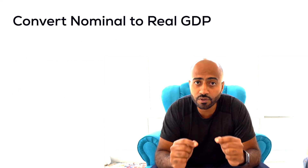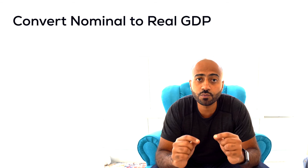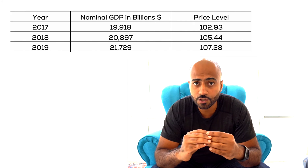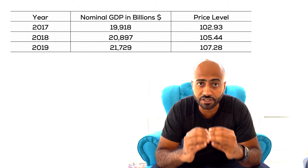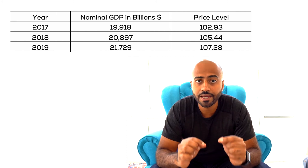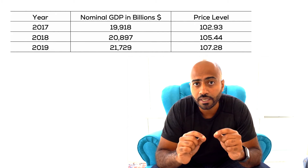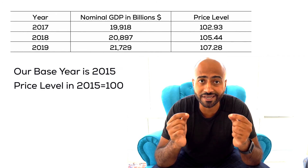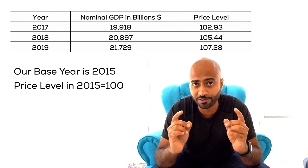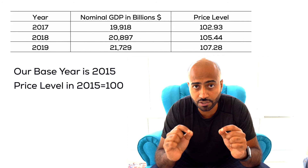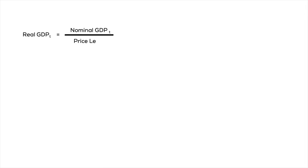For now, we won't focus on how these are calculated — the information will just be given to you. For example, we have three years of data: 2017, 2018, and 2019. For each of those years, we have nominal GDP and the price level, which here is the GDP deflator. The price level is provided as an index — it does not have units, so don't try to add units to it. Usually, the price level at the base year is going to be 100.